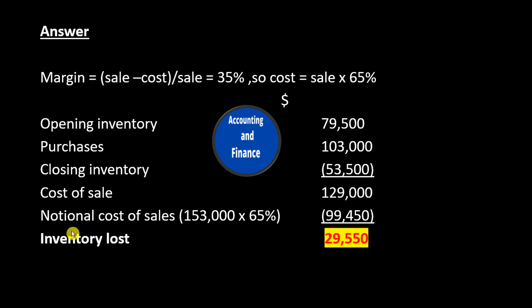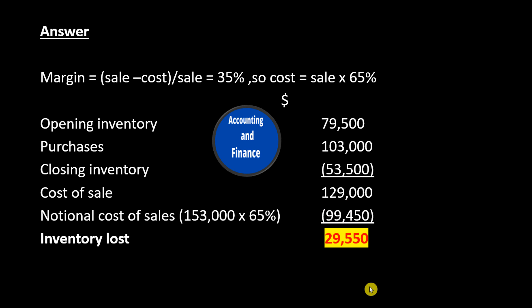Notional cost of sales: $153,000 times 65% equals $99,450. Inventory lost: $129,000 minus $99,450 equals $29,550.